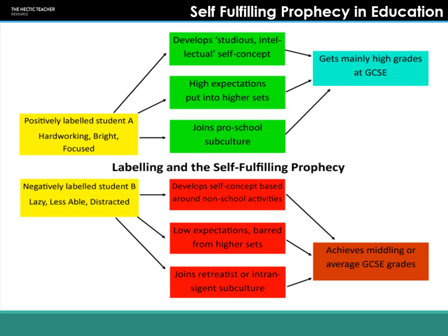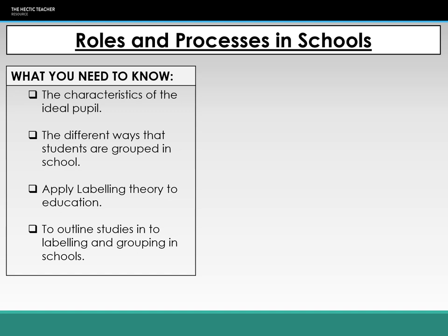So in summary: roles and processes in schools - we talked about Becker's ideal pupil, the different ways students are grouped in school through setting, streaming, in-class and mixed ability groupings. We attached labelling theory to education, discussing how there's a speculative label which is elaborated on, and then a negotiation phase where that label is either stabilised and internalised or rejected. Key studies from Rosenthal and Jacobson, Rist, Hempel-Jorgensen, and Keddie reinforce these ideas. Thank you very much.